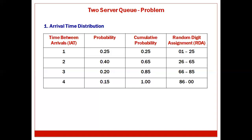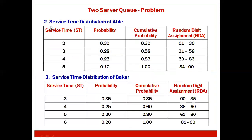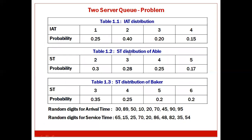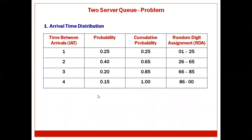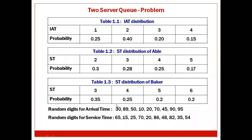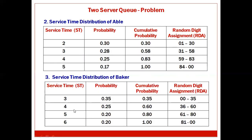The next table is the service time distribution for Able, since we have two service people — Able and Baker — service time distributions are given separately for each. For Able, ST values are 2, 3, 4, 5 with corresponding probabilities; find cumulative probability and RDA. Similarly, for Baker, ST values are 3, 4, 5, 6 with corresponding probabilities; find cumulative probability and RDA. So three distribution tables are done.